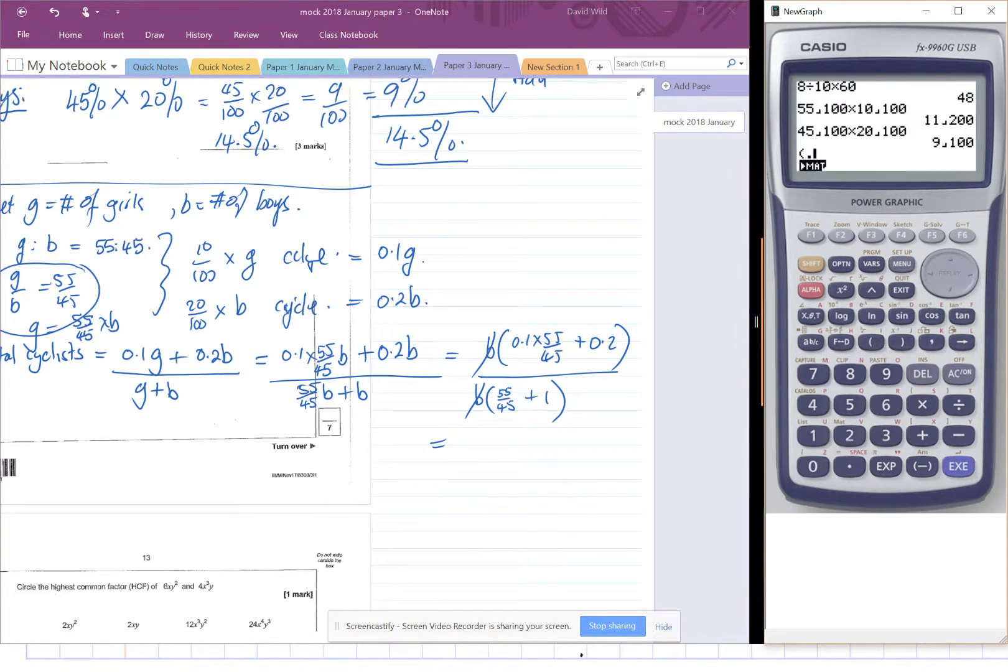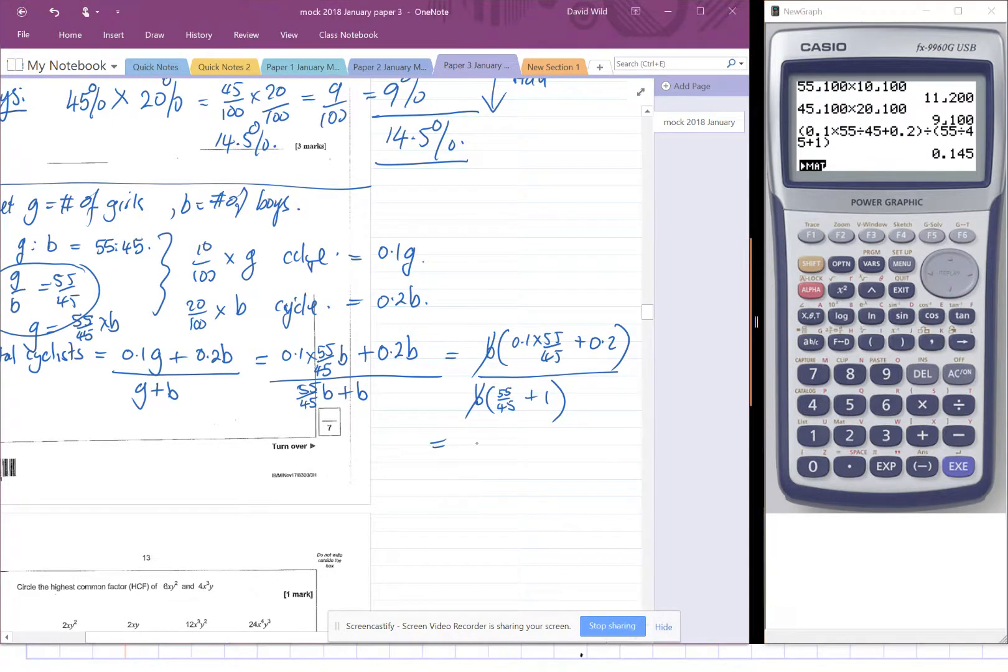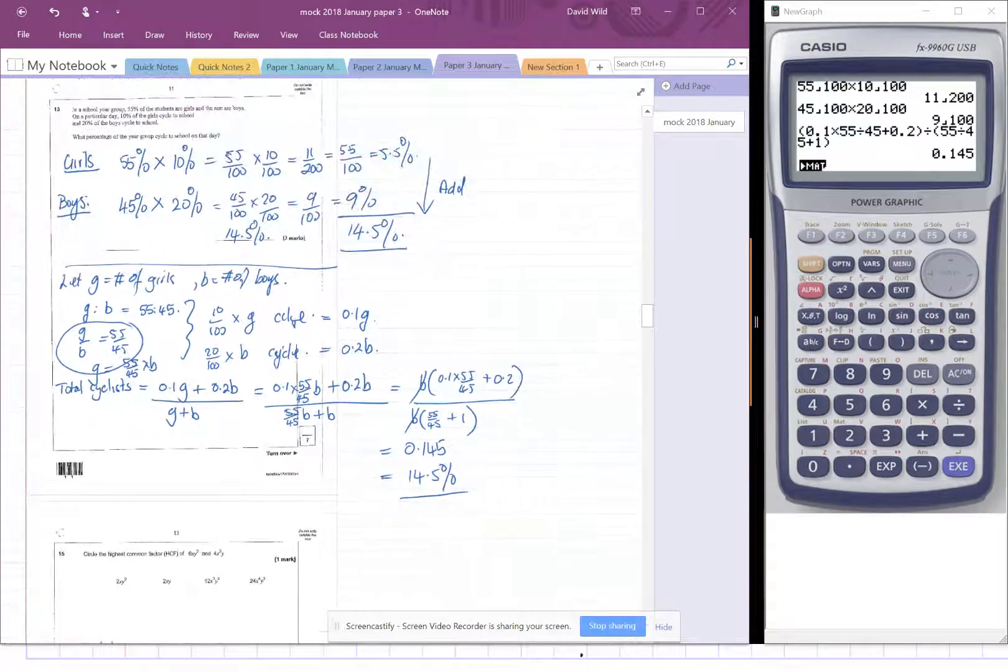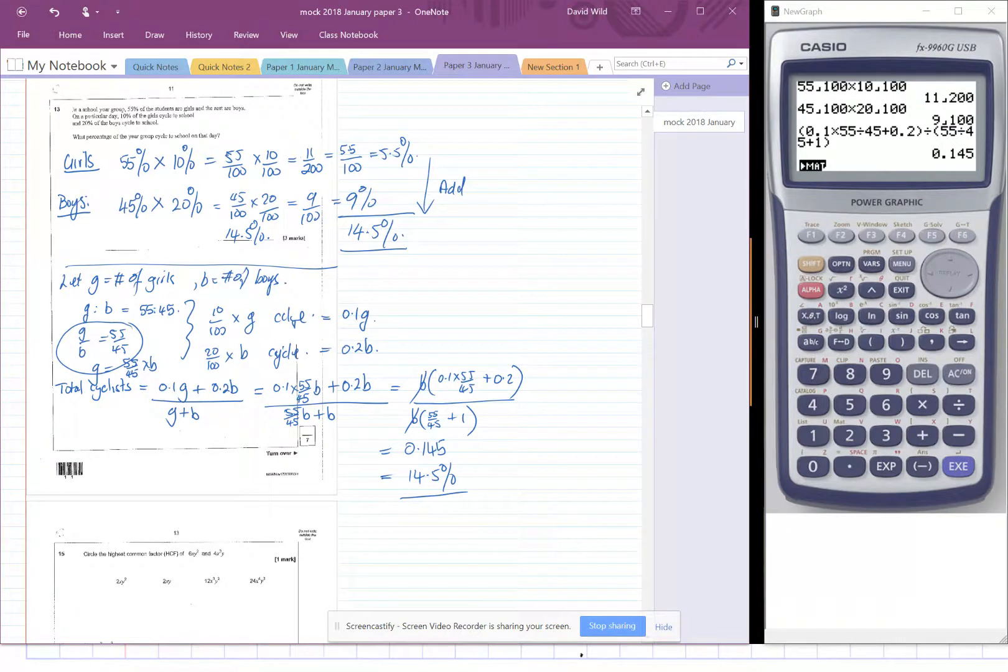So our numerator is 0.1 times 55 over 45 add 0.2 and we're going to divide that by 55 over 45 plus 1 and we've got 0.145 and as a percentage that's 14.5%, same answer. Okay so you can do it with algebra if you want to or you can do it the previous way.